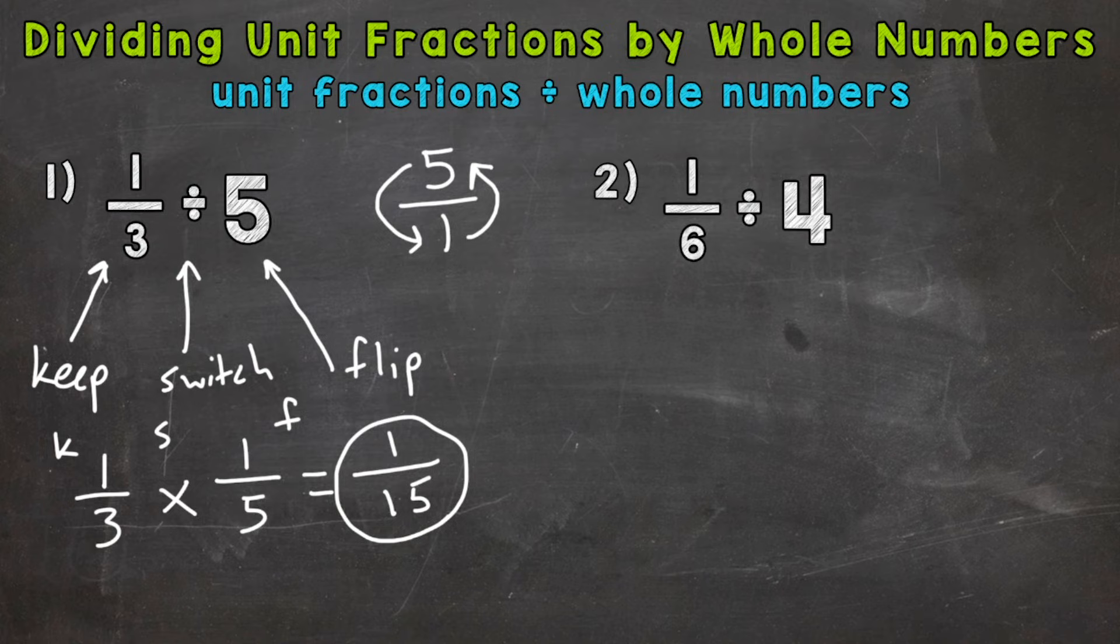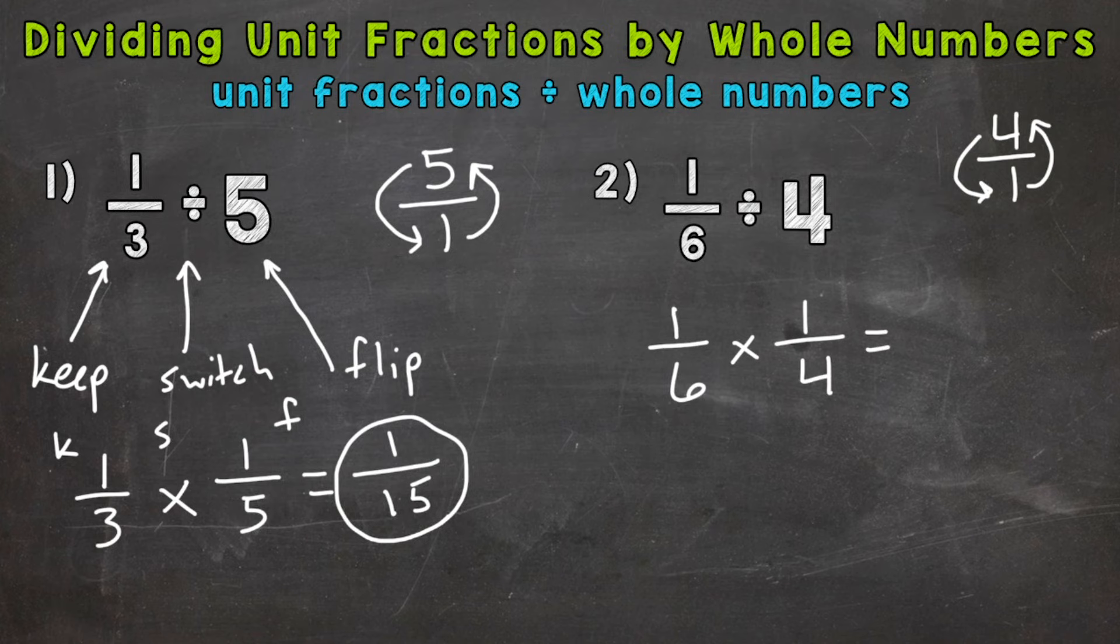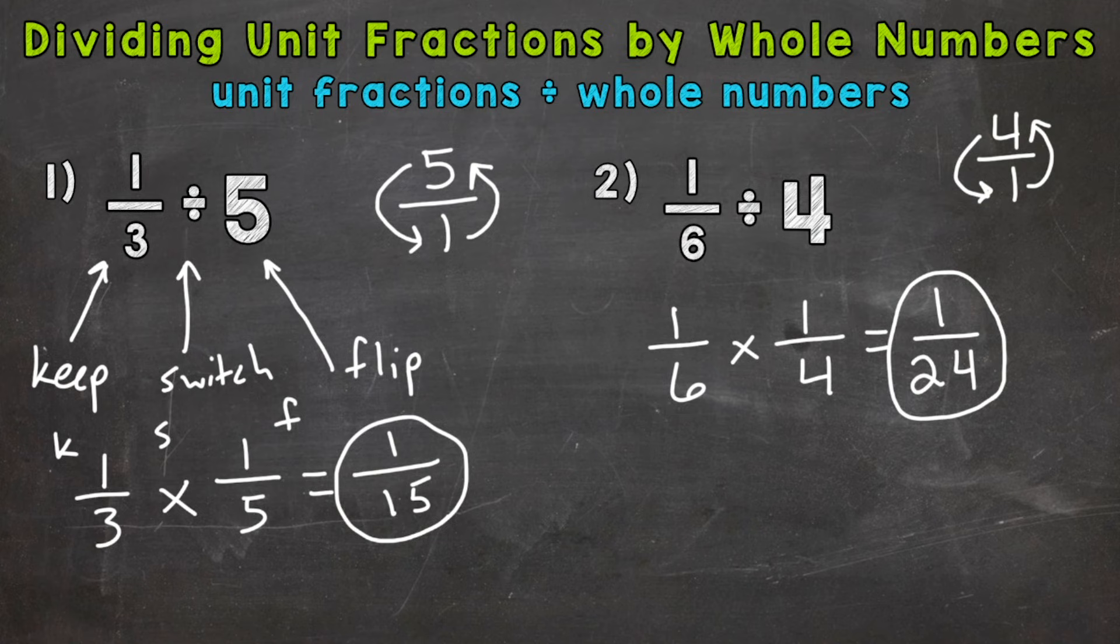So let's do number 2 here, where we have 1 sixth divided by 4. So keep, switch, and remember, we can put any whole number over 1 to put it into fractional form. So now we can flip here, and we have 1 fourth. 1 times 1 is 1. 6 times 4 is 24. So we get 1 24th. We started with 1 sixth, a fraction less than a whole, and we split it into four equal groups. And each of those groups has a value of 1 24th.